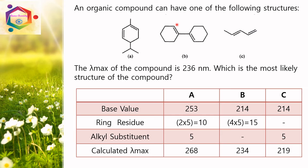For compound B (heteroannular): base value 214 + 4 ring residues (20) = 234 nm. For compound C (acyclic conjugated diene with 1 alkyl substituent): base 214 + 5 = 219 nm. Since the given lambda max value of the compound is 236 nm, it most likely corresponds to structure B, because the calculated value of structure B is 234 nm, which is nearest to the observed value of 236 nm. Therefore, structure B is the correct structure.